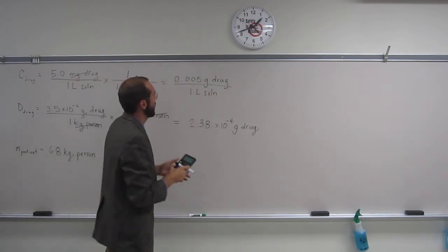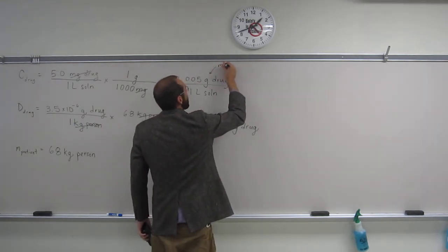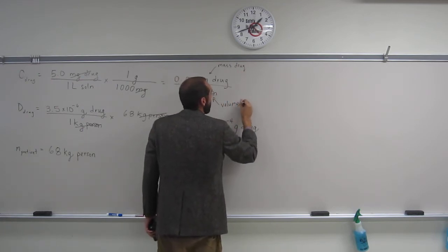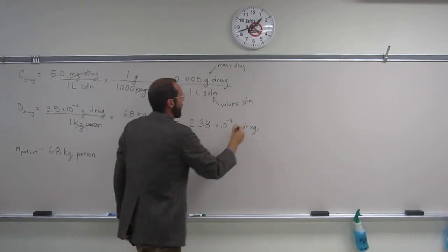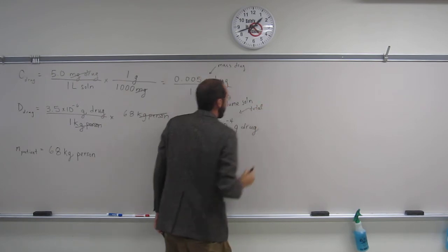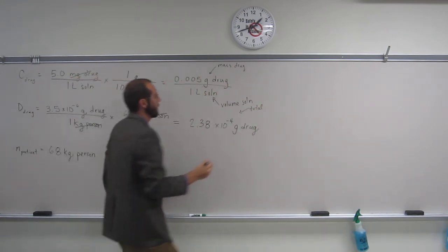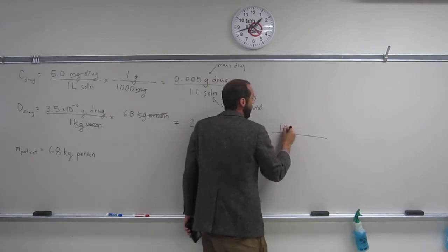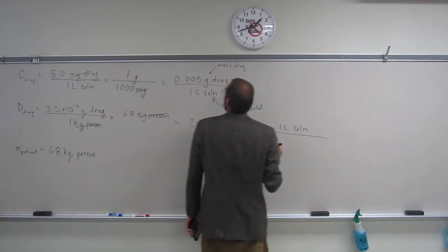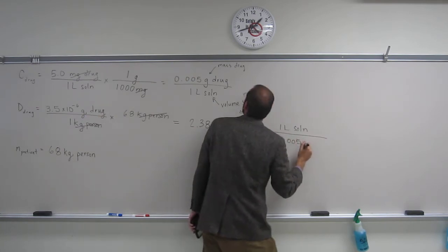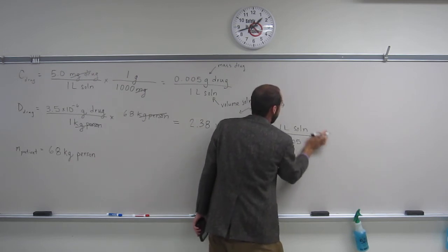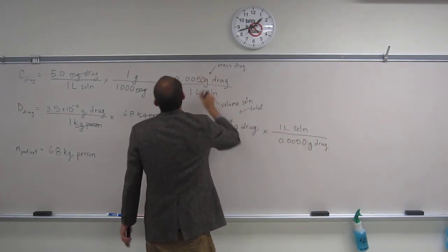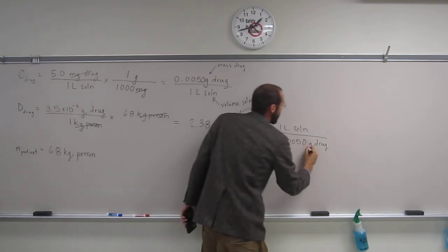Okay, so we have this conversion factor that converts the mass of the drug to the volume of the solution that we're going to need. And here, we have the total mass of the drug. So all we're going to have to do is just flip this conversion factor over and multiply it, or in other words, divide this by this. So, 1 liter of solution, 0.005 grams. It's actually going to be 0.0050 grams of the drug. Put that 0 in, remember to account for that safety.